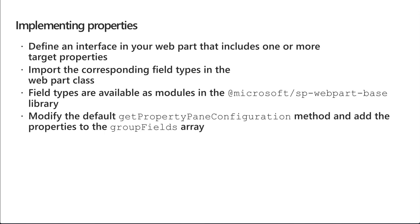To define your public properties on your web part — these aren't directly related to the property pane but they're the custom properties on your property pane — you're going to import corresponding field types on your web part class. Field types are available as modules in the @microsoft/sp-webpart-base NPM package. You're going to modify the default getPropertyPaneConfiguration method and add properties to the group fields array.